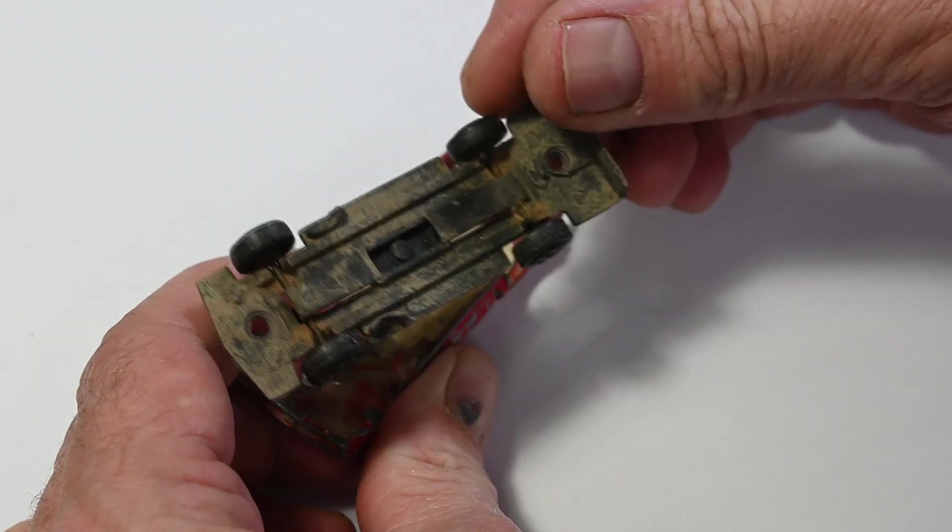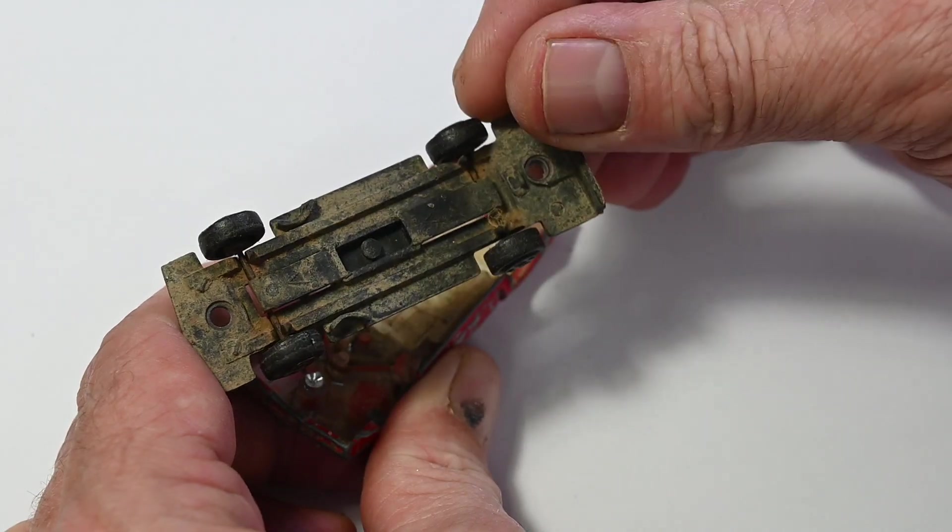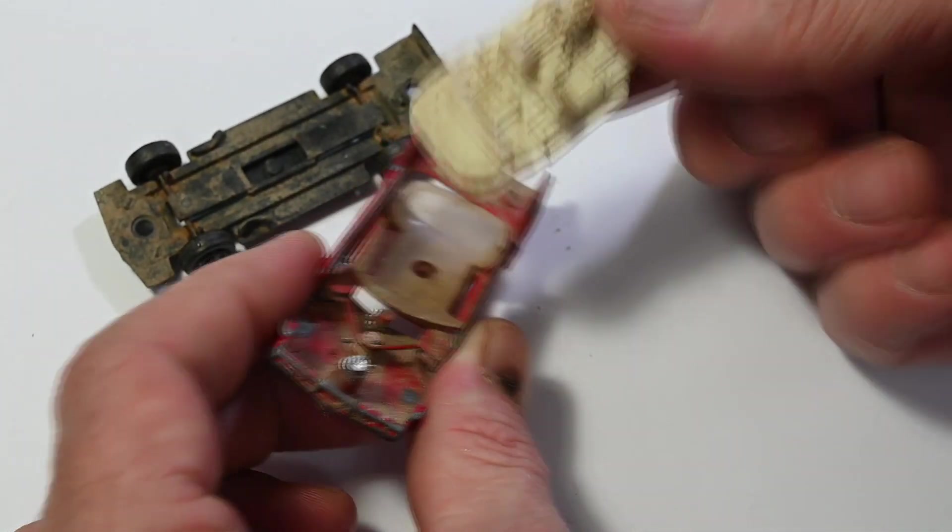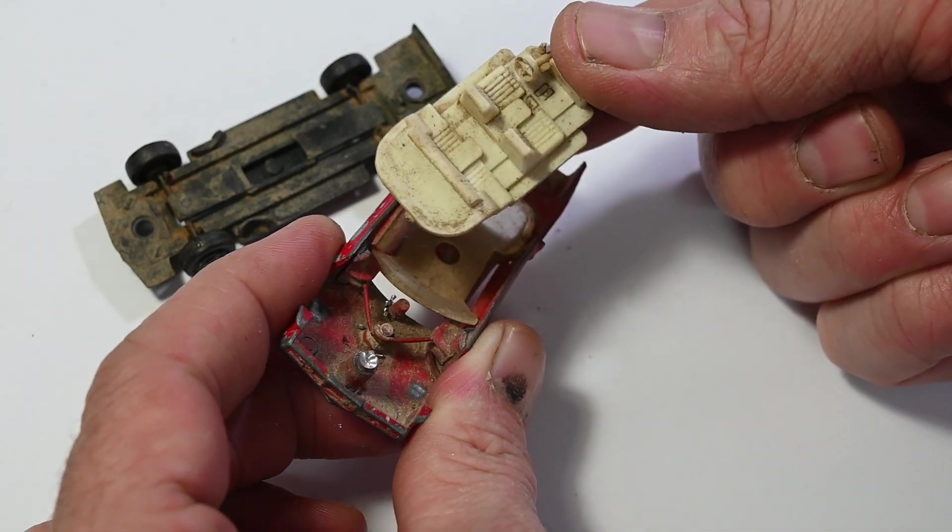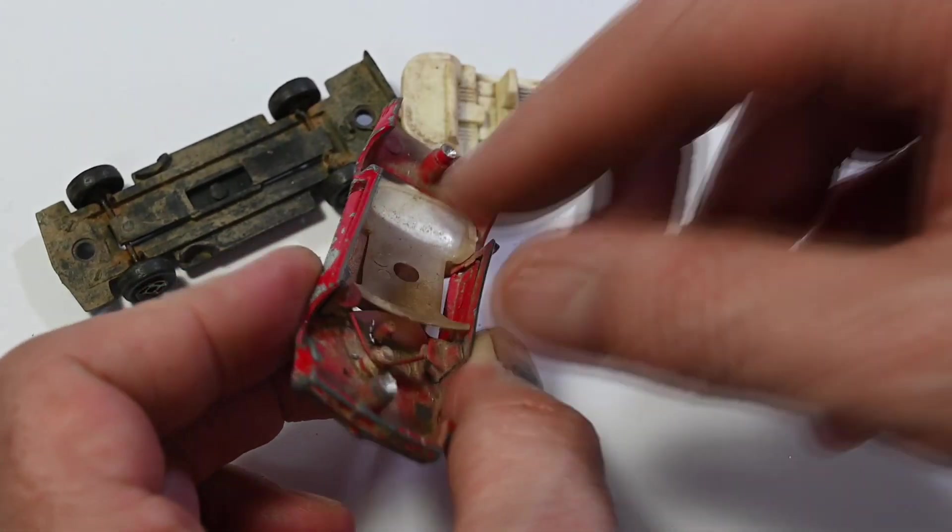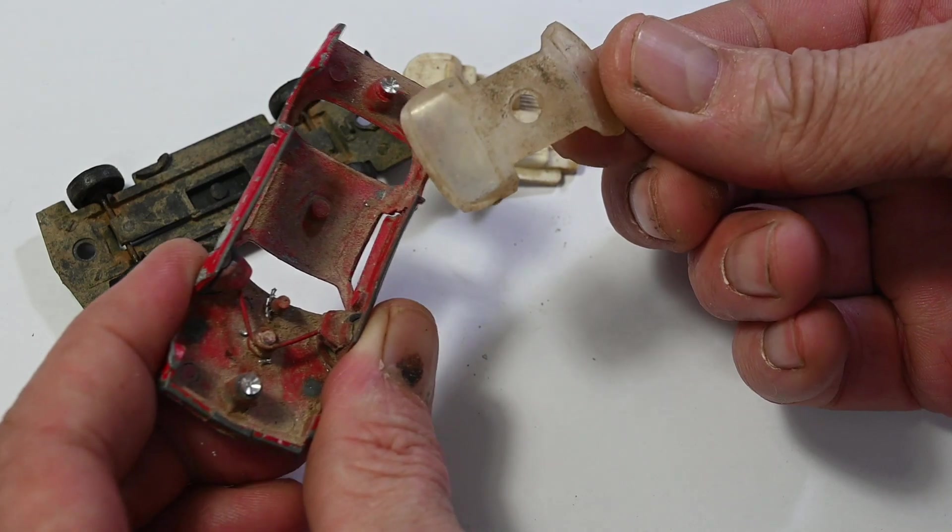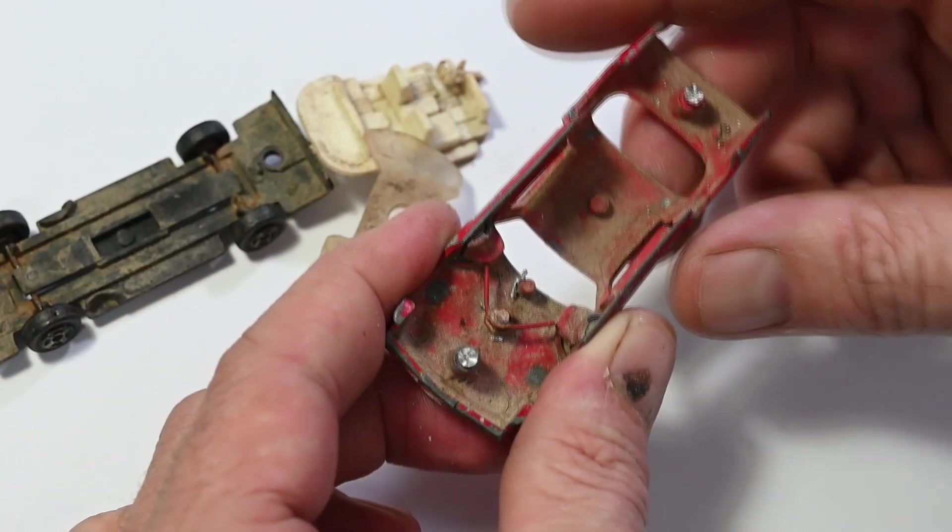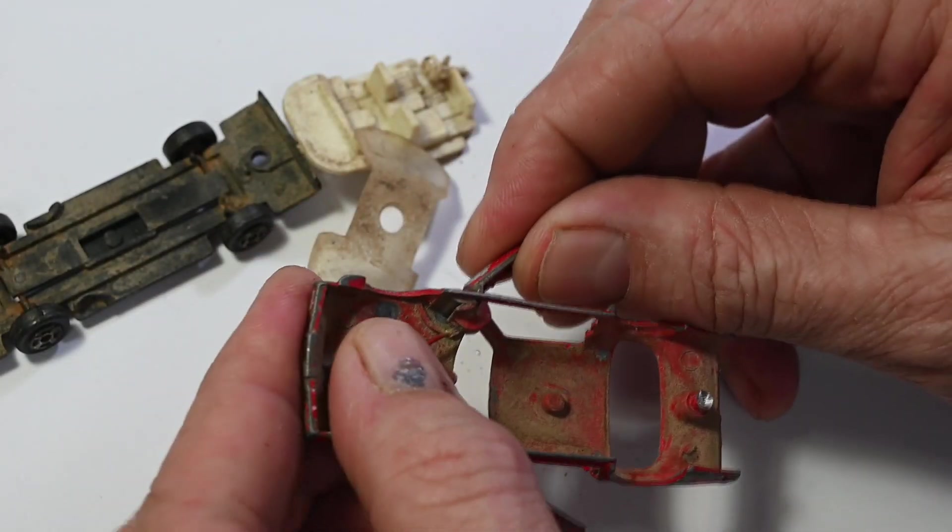So you can see it's pretty grubby in there. A little bit of rust around the axles but not too bad. Grubby old interior. And windscreen. Another car that looks like it's been for a swim or two in a muddy puddle maybe.